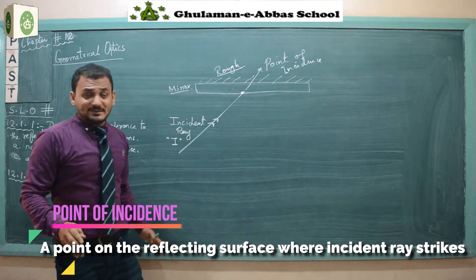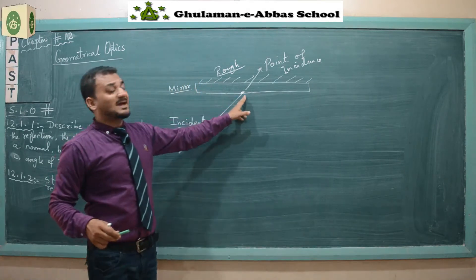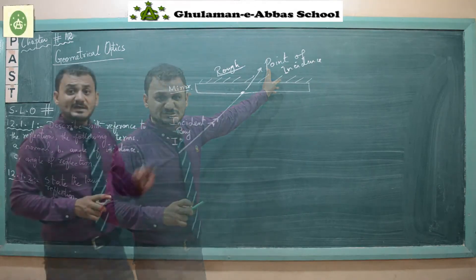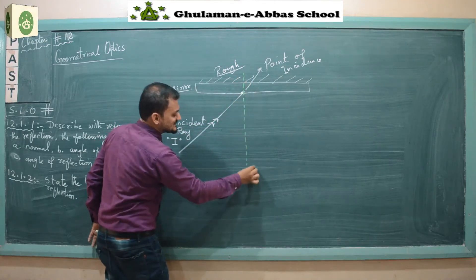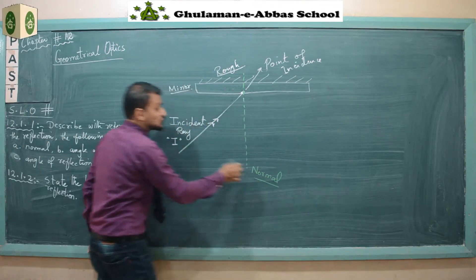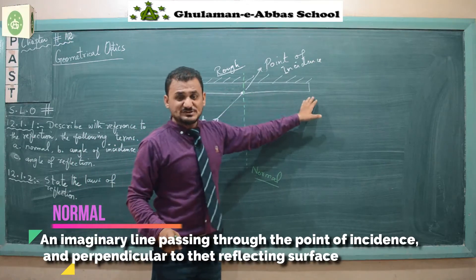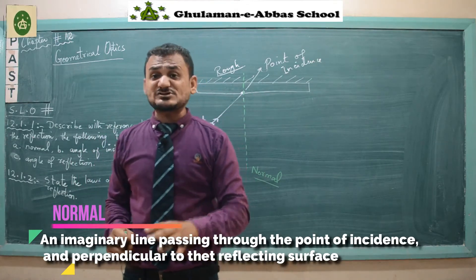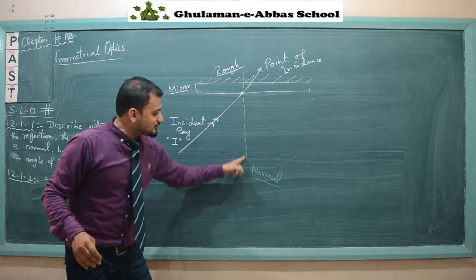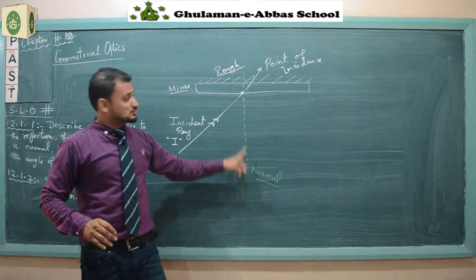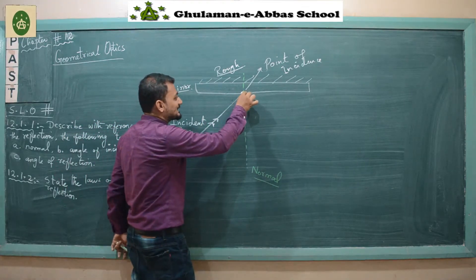Another term is point of incidence — that is the point on the reflecting surface where the incident ray strikes the mirror. Next, we draw a line known as the normal. The normal is an imaginary line that is perpendicular to the reflecting surface at the point of incidence. Perpendicular means it makes a 90-degree angle with the surface.